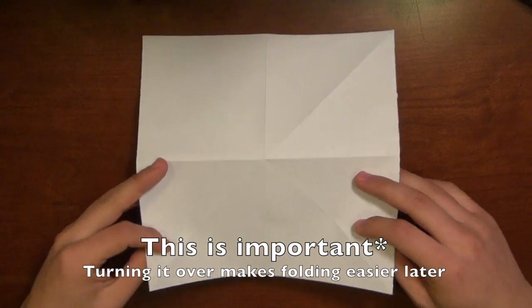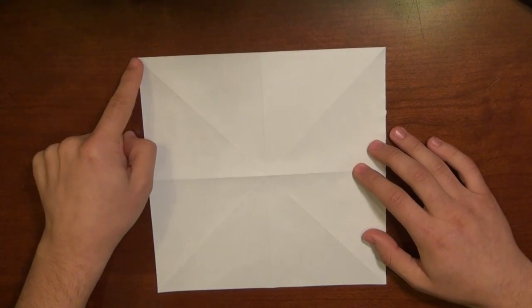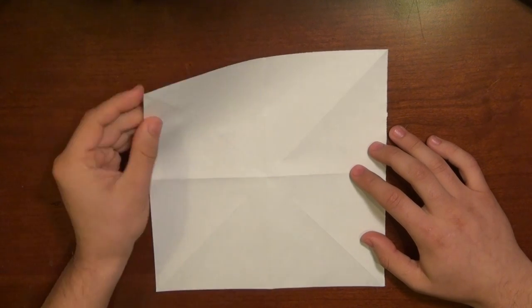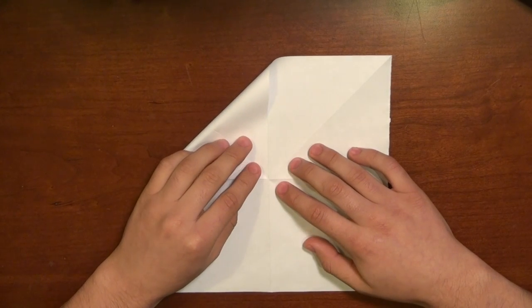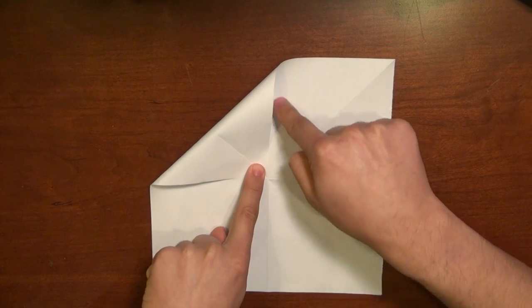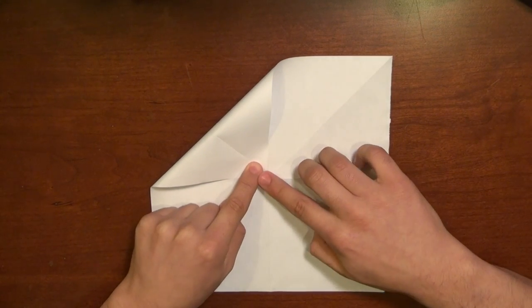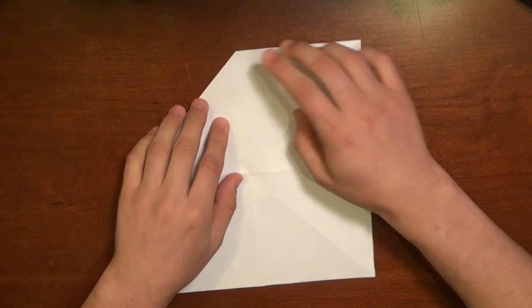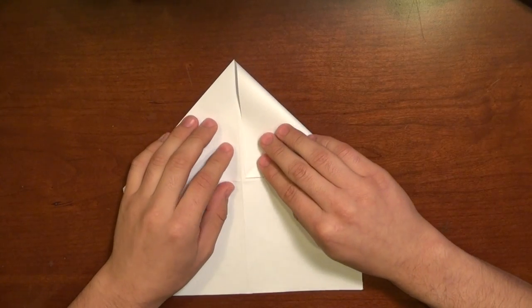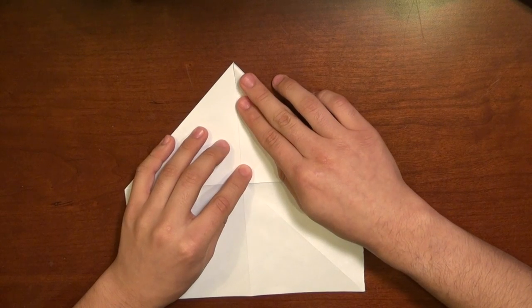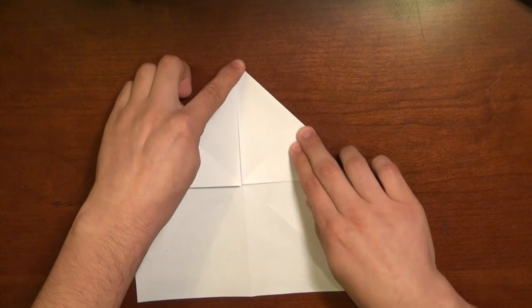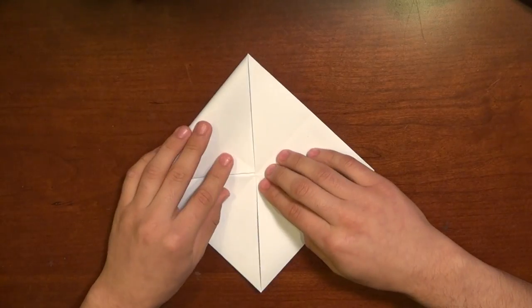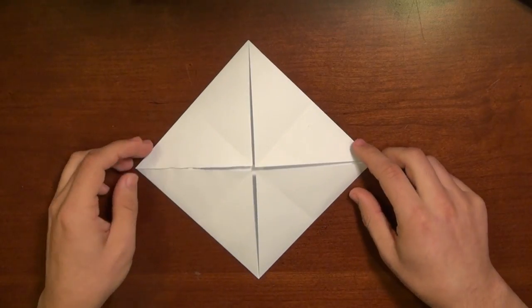Now we're going to turn the paper over. And I'm going to take each of these corners and fold them directly into the middle. Take the corner of the paper, fold it into the middle, and just make sure that both of these edges line up with the creases that we have in the paper. Once they're lined up, you can make a crease on the edge here. Do the same with the other corners. Just line it up like you would for an airplane and then make a crease.